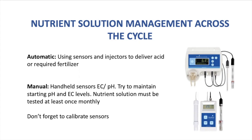Usually we use phosphoric acid, nitric acid, or citric acid for organic systems. And plants don't take the same amount of nutrients every time, so we must test the water solution at least once monthly. This is to check if a particular nutrient must be increased in order to maintain the original ppm. And don't forget to calibrate your sensors.